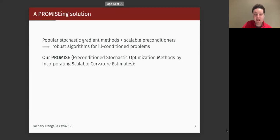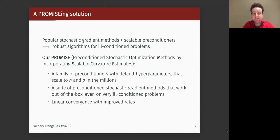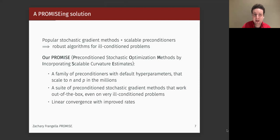What I'm going to talk about today is a framework we call PROMISE, which stands for Preconditioned Stochastic Optimization Methods by Incorporating Scalable curvature Estimates. We combine pre-existing stochastic gradient methods that are effective in the well-conditioned or moderately ill-conditioned case, plus preconditioners that are very scalable. This gives us algorithms with default hyperparameters that can work on datasets where N and P are in the millions, and they'll work out of the box on very ill-conditioned problems.